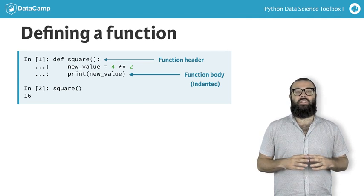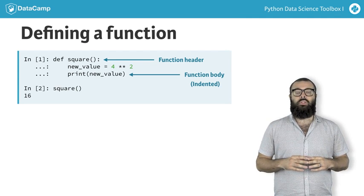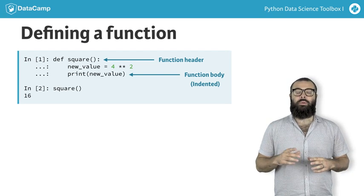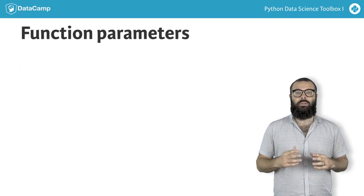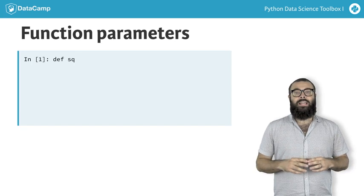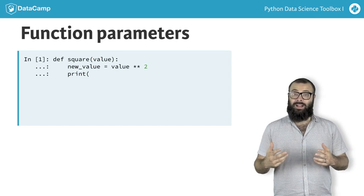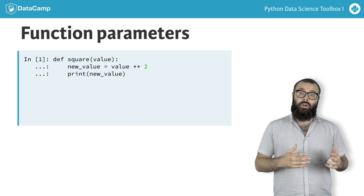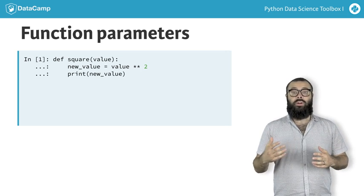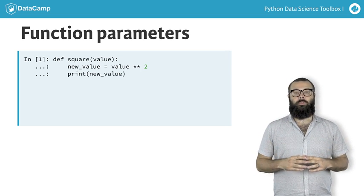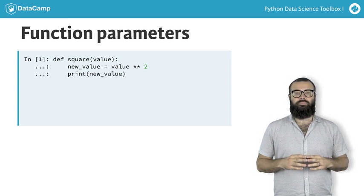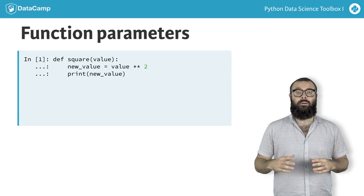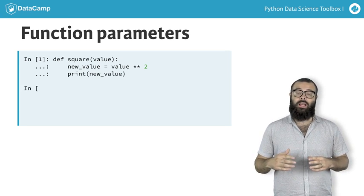What if you wanted to square any other number besides 4, though? To add that functionality, you add a parameter to the function definition in between the parentheses. Here you see that we've added a parameter of value, and in the new function body, the new variable new_value takes the square of value, which is then printed out. We can now square any number that we pass to the function square as an argument.